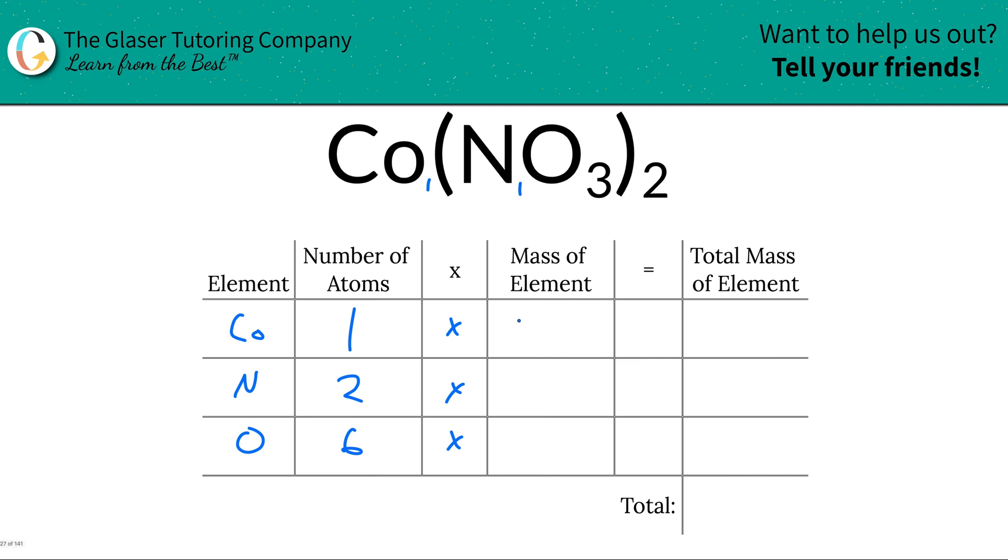So 58.93 for cobalt, nitrogen was 14.01 and oxygen is 16. Then what we're going to do is find the total mass of that particular element in the compound. What we do is take the mass of a singular atom or a single mole, depending upon if you're talking about molar mass or molecular mass.